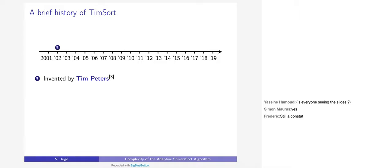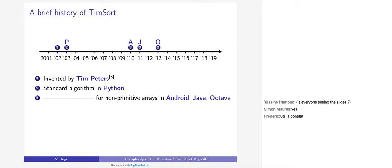The history begins in 2002: the algorithm TimSort was invented by Tim Peters, and colleagues named it TimSort to praise him. It was very effective in practice even though there was no robust complexity analysis at the time. One year later it became the standard sorting algorithm in Python, and later was adopted in Android, Java, Octave, and other languages — but only for non-primitive arrays, meaning arrays of objects rather than primitive types like integers.